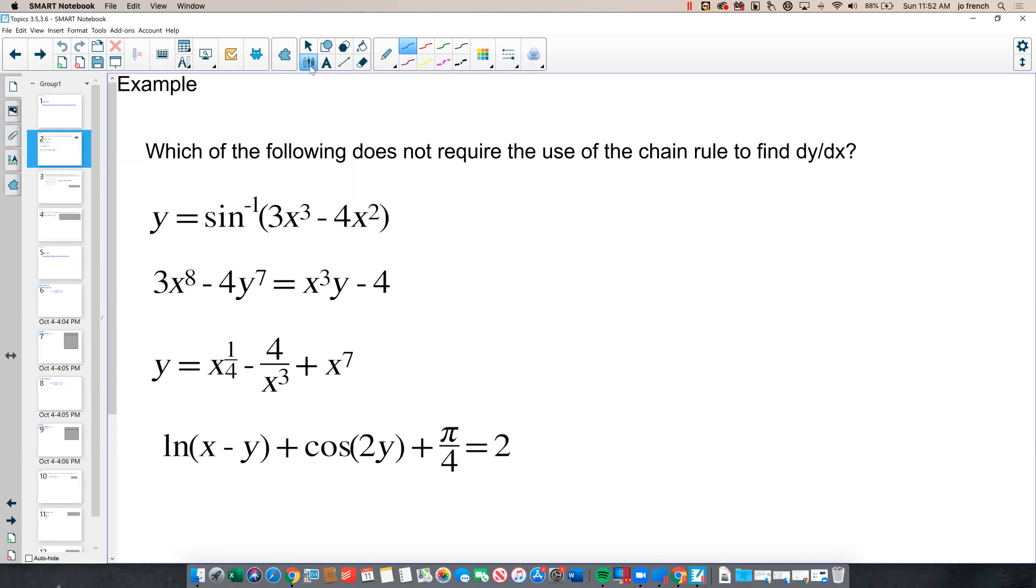If we look at our first example, here we've got the inverse sine of 3x cubed minus 4x squared. And that right here tells me that this is a composite function, so we definitely would need the chain rule, where the inside function would be 3x cubed minus 4x squared, and my outside operation would be the inverse sine.